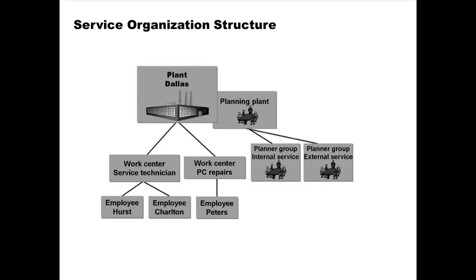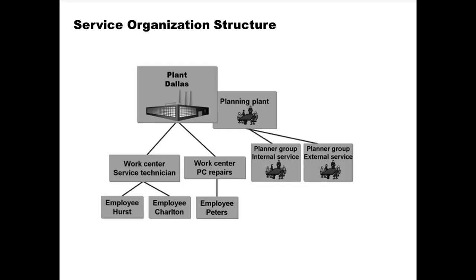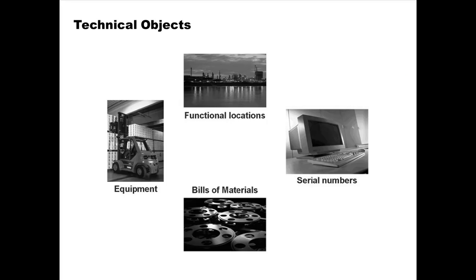For customer service, the organization levels include a planning plant, within which there could be several planner groups — sets of people who perform planning for customer service. There are also work centers where customer service is actually executed, and within work centers there could be employees attached to those work centers. A plant that does customer service is really a customer service center, and a planning plant is one that also does the planning.